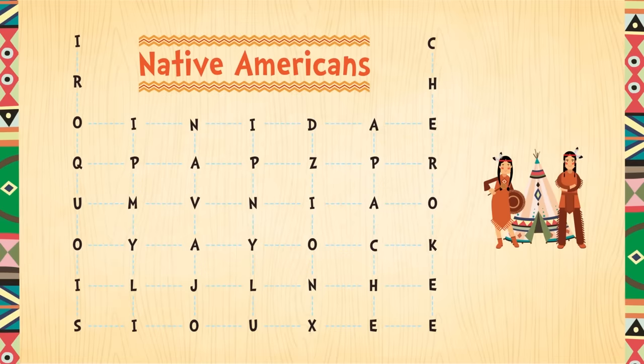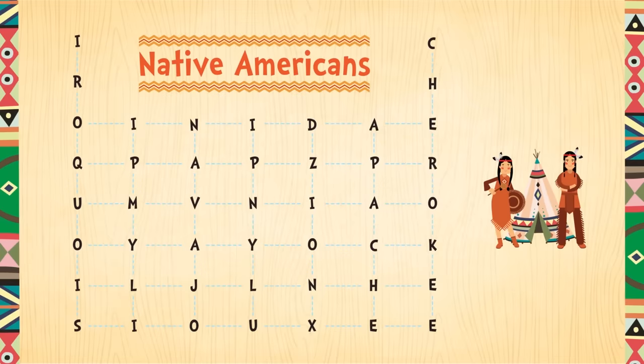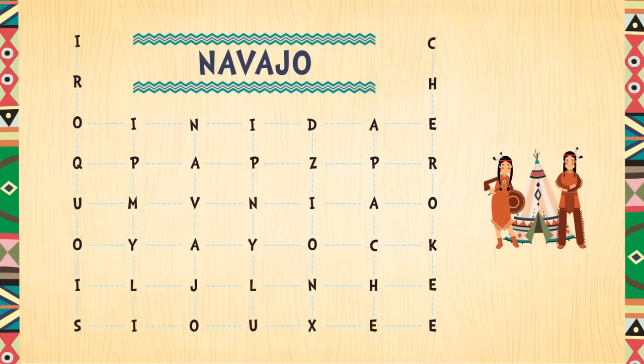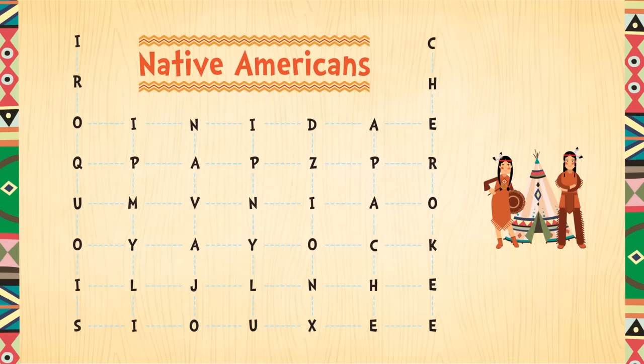Let's take a look at the worksheet. Can you find the names of five Indian tribes or nations in the word search? We're looking for Cherokee, Sioux, Navajo, Iroquois, and Apache. The words are written horizontally and vertically.